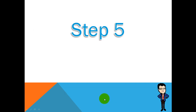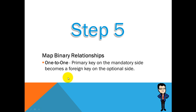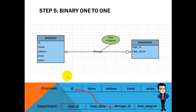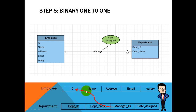Step five: map binary one-to-one relationships. The primary key on the mandatory side becomes a foreign key on the optional side. In our example, the employee-manages-department relationship: it is optional for most employees to manage any department, since only the manager can manage a department. But for the department, having a manager is mandatory. So the primary key of the employee table becomes a foreign key in the department table.